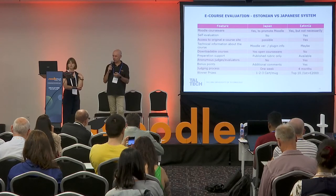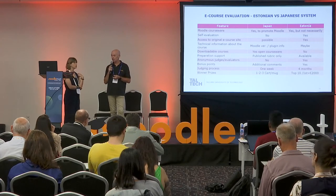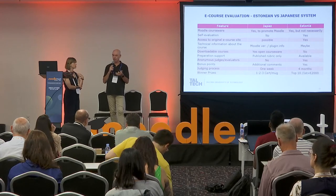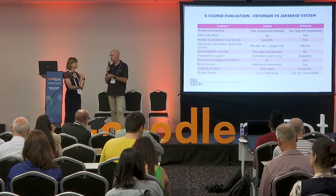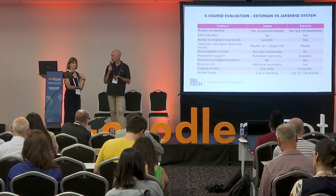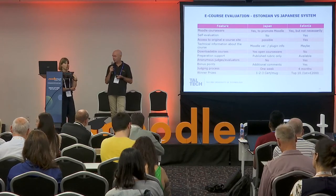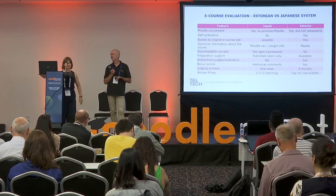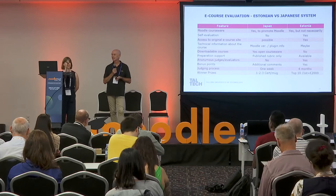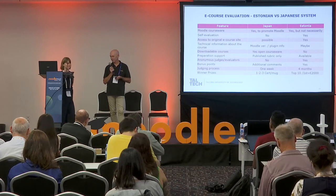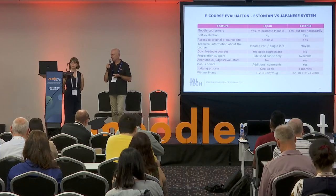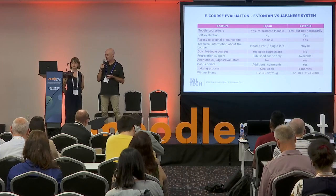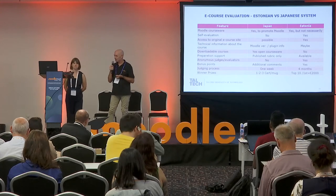One other difference: in Japan our judging process is quite short — about one week from submission to the award ceremony. The Estonian process is quite long, involving lots of time, teamwork, and finding consensus. And in terms of prizes, we showed our certificates and the coffee mug — that's about the extent of our prizes. We want people to share and it's all very informal.